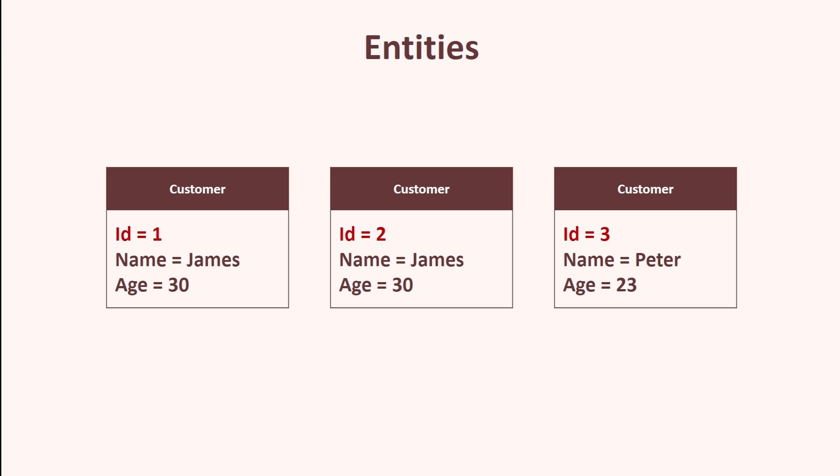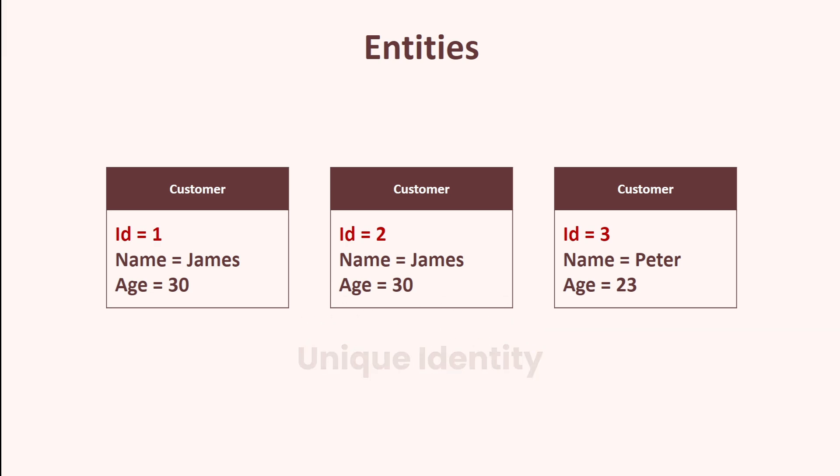An entity is a class that is defined by its unique identity, not by its attributes. If the attributes of two entities are identical but their ID is different, they will be considered two different entities. In this example, customer1 and customer2 will be treated as two different entities because their IDs are different.